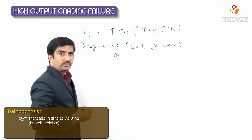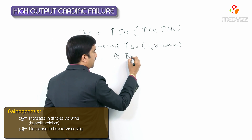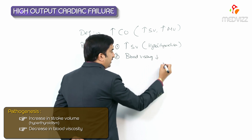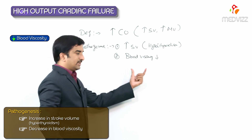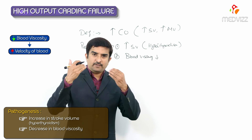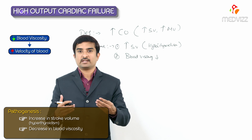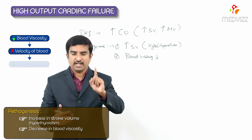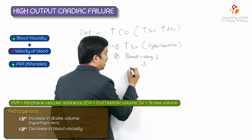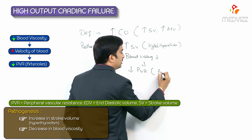The second condition is a decrease in blood viscosity. Whenever blood viscosity decreases, the velocity of blood flow increases. Whenever blood viscosity decreases and velocity increases, there will automatically be a decrease in peripheral vascular resistance (PVR). So, a decrease in blood viscosity leads to a decrease in PVR in the arterioles.